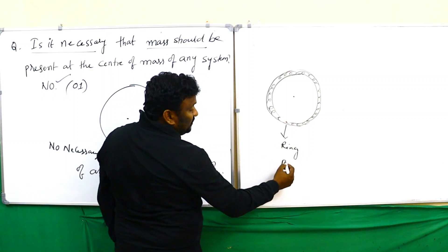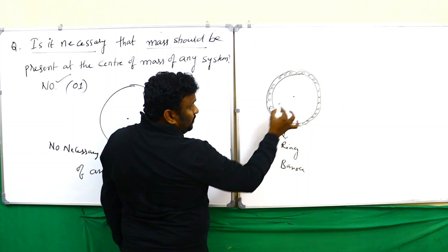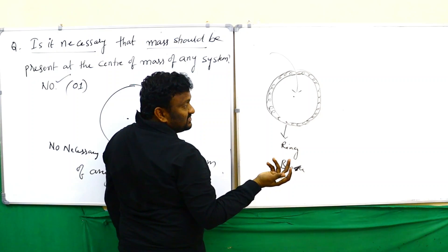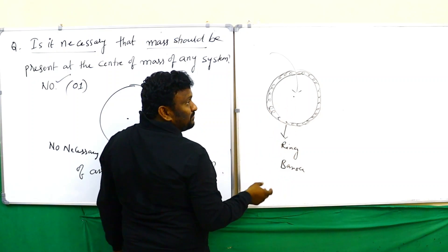In the case of a ring or any bangle, at the middle we have the center of mass, but there is no mass at that point. The ring has a hole at the center.